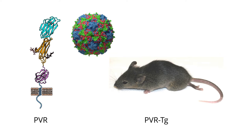Mouse cells are already permissive for polio infection — you remember what that means — but they're not susceptible. If you add the receptor, they become susceptible. You take the human gene for the polio receptor, put it in mice as a transgene, and the mouse becomes susceptible and permissive to infection. You can see this animal has hind limb paralysis — it has polio. We've injected a human strain of poliovirus into this animal; it goes to the central nervous system and causes disease. And in a really cool twist, all the attenuated polio vaccines are now tested in mice instead of in monkeys — I've saved thousands of monkeys as a result of this discovery.